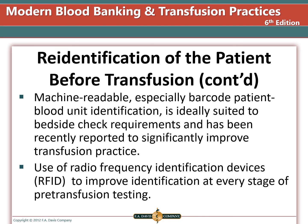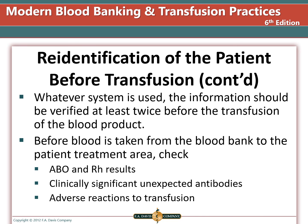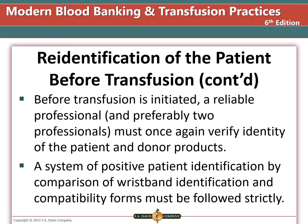While in your clinical rotations, you should try to witness a blood transfusion identification procedure. Whatever system is used, the information should be verified at least twice before transfusion. Before blood is taken from the blood bank, staff check ABO and RH types, the test for unexpected antibodies, and history of adverse reactions. Before transfusion is initiated, usually two professionals verify the identity of the patient and the donor product, and positive patient identification by comparison of wristband and compatibility forms must be performed. Ensuring the right patient gets the right blood product is critical to preventing severe transfusion reactions.